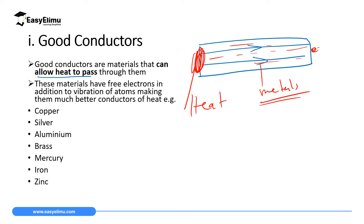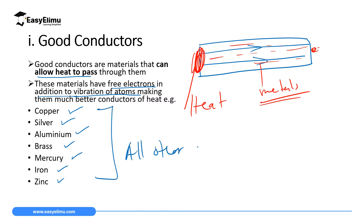What makes good conductors good conductors of heat? These materials have free electrons in addition to vibration of atoms. Both mechanisms make them better conductors of heat. Examples of good conductors include copper, silver, aluminium, brass, mercury, iron, and zinc — and in short, all other metals are good conductors of heat.